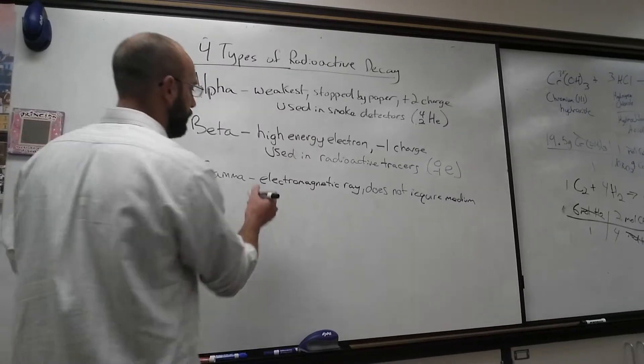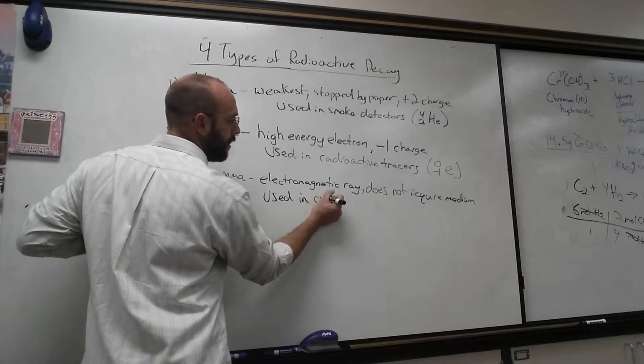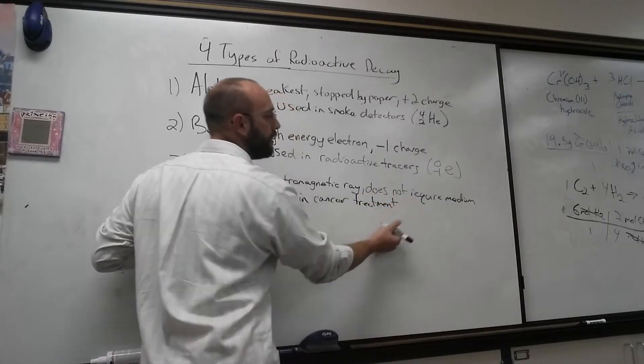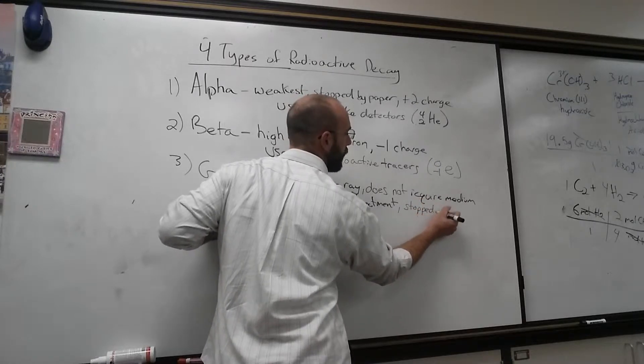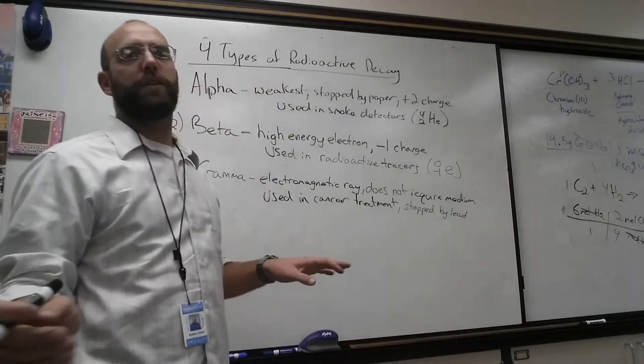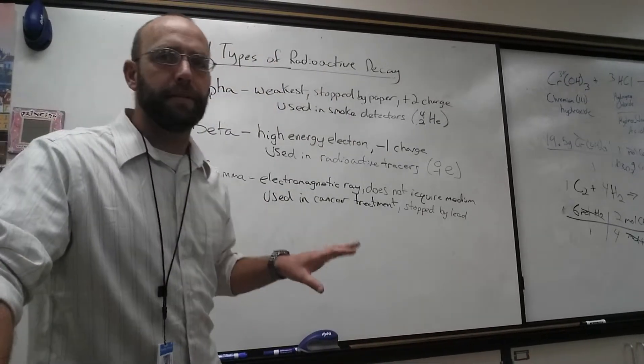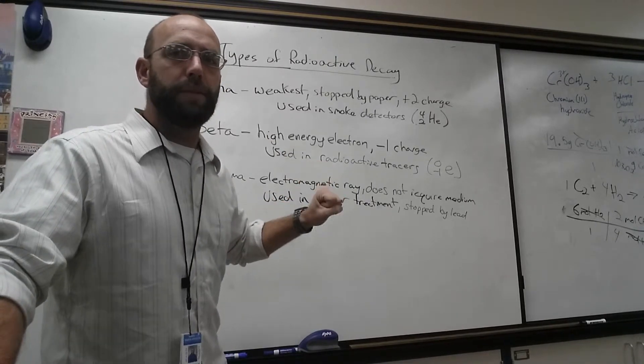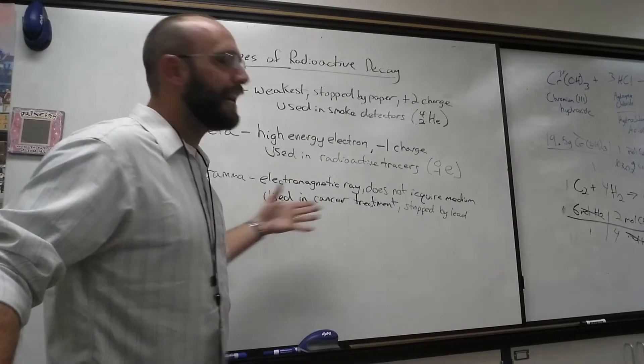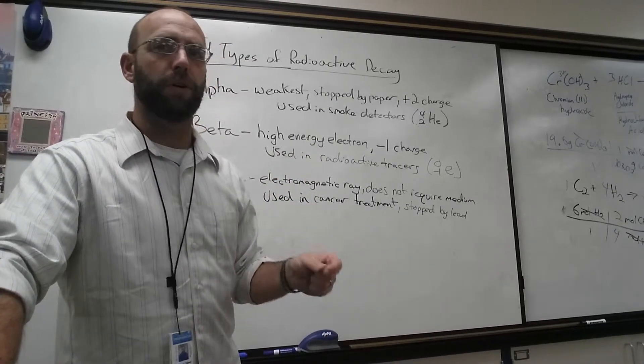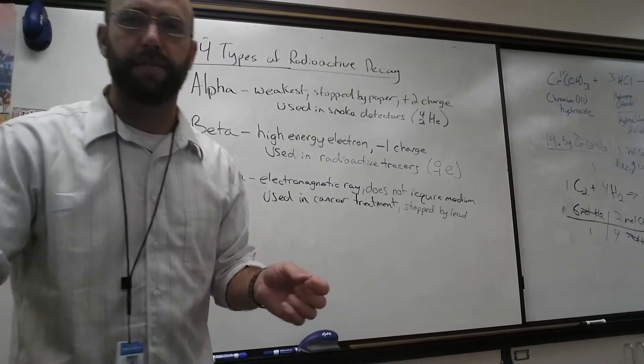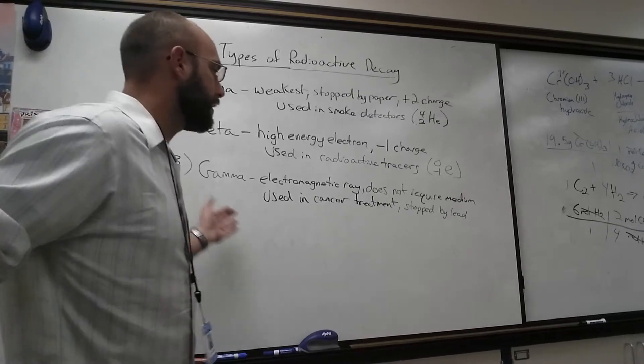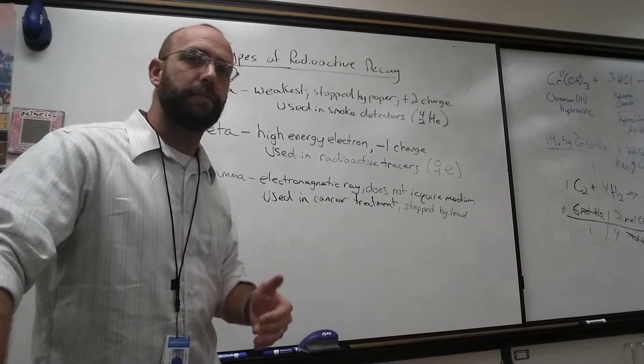It's used in cancer treatment. This is the stronger type, stopped by lead. This can cause cancer and can treat cancer. What happens is this will mutate cells. Mutated cells usually die. So if we radiate cancer, we can kill those cancer cells. But gamma radiation can actually cause cancer as well when used to treat cancer.